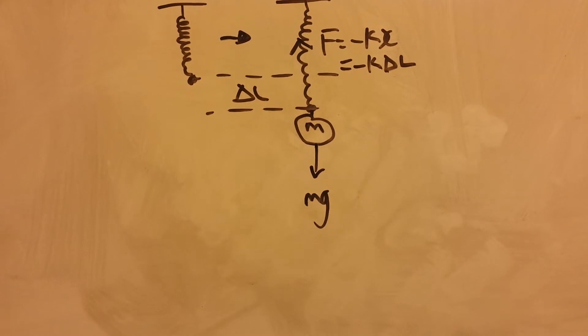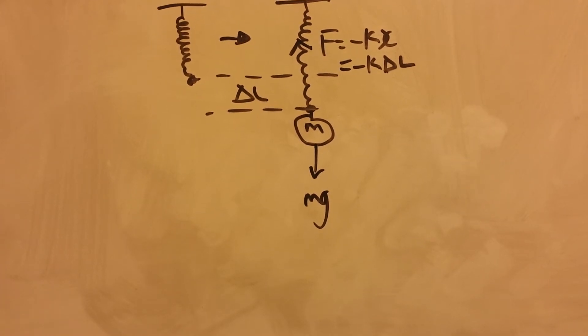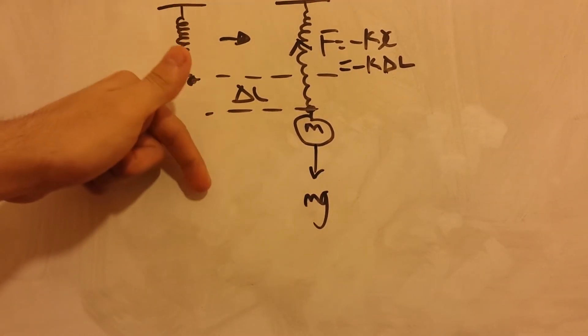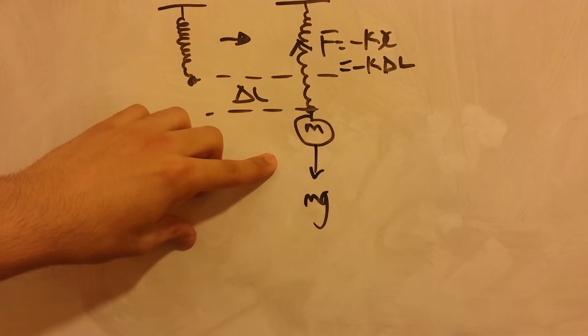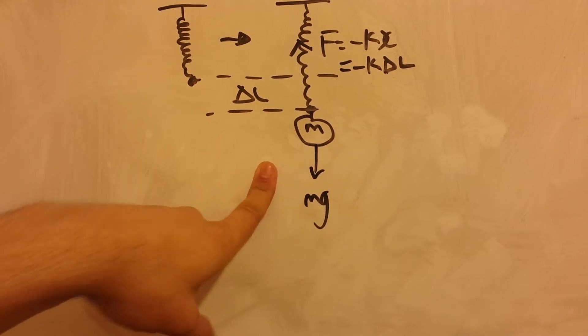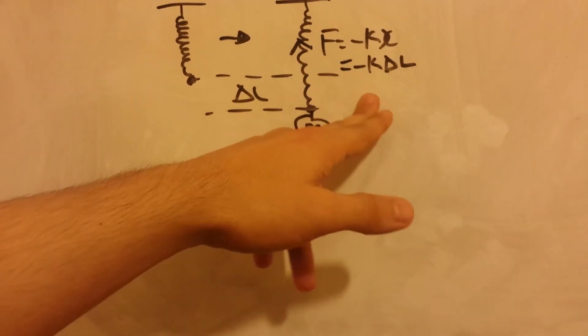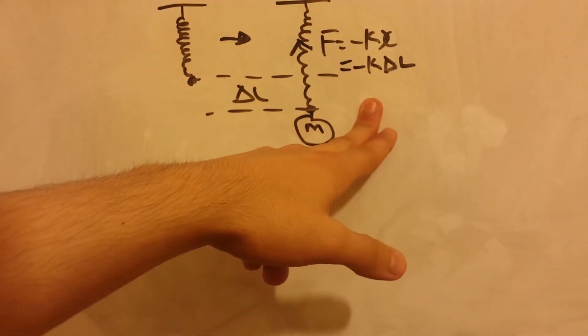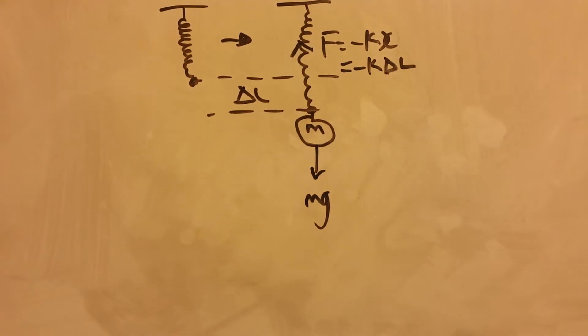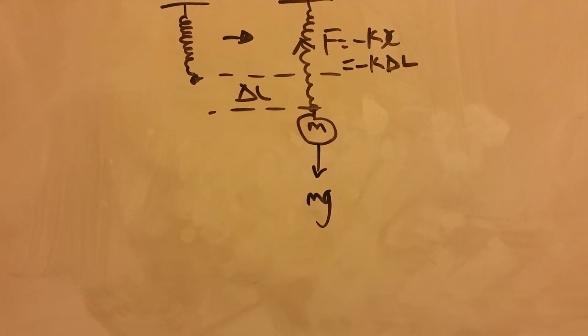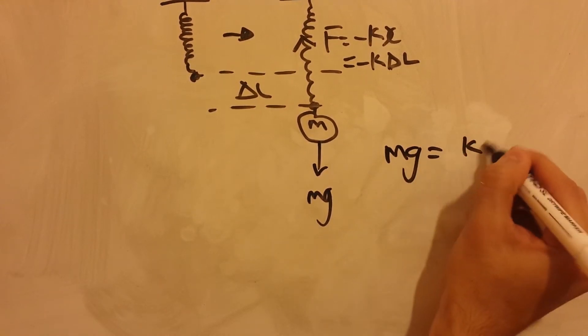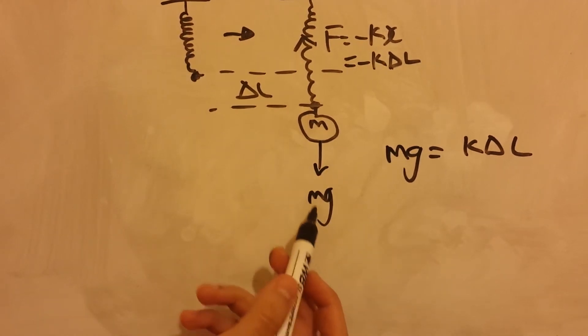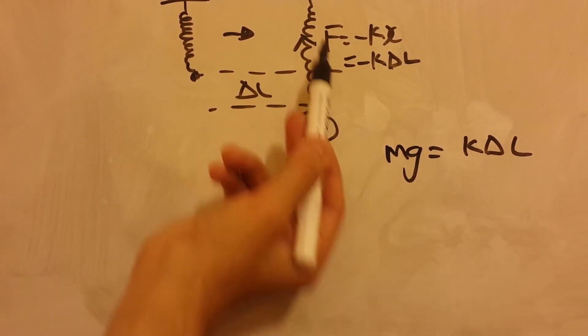And I should mention that we are taking the displacement in the downward direction as positive. So the resultant force on the mass is equal to the gravitational force take away the spring force. And since it is in equilibrium position, we say that mg is equal to the gravity, the weight force is equal to the spring force.